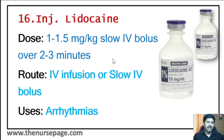Thirty-third is IV dextrose — also an emergency medicine. Uses include treatment of hypoglycemia. IV dextrose comes in concentrations of 5%, 10%, 25%, and 50%; administered according to the severity of hypoglycemia. It also provides an immediate source of energy when given intravenously. Route is IV infusion. Dosage is 25 to 50 grams IV bolus, repeated as needed.